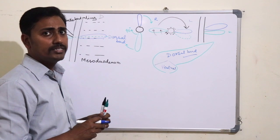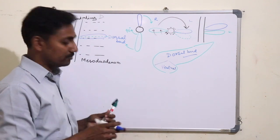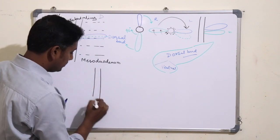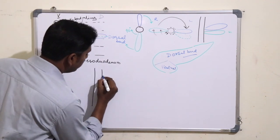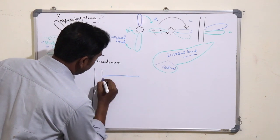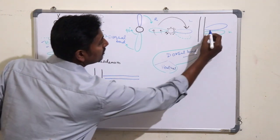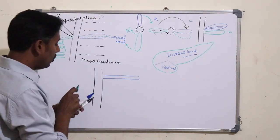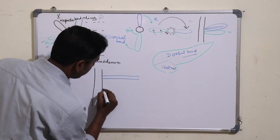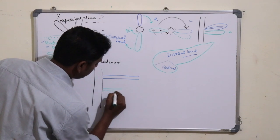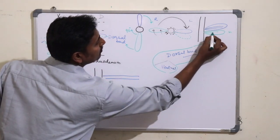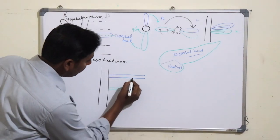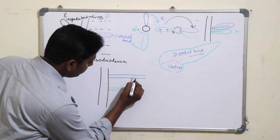Now we will see how the ductal system of the pancreas is formed. This is the developing gut; this is the duct of the dorsal bud, and below this will be the duct of the ventral bud. During further development, both these ducts will fuse together, or anastomose with each other.